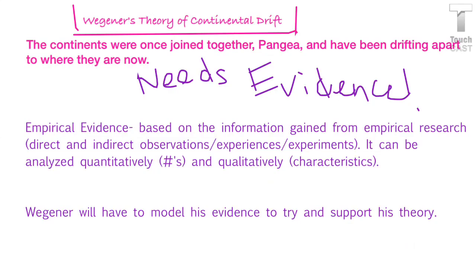In order for his theory to be accepted, he has to come up with evidence. He's going to use empirical evidence, which is evidence based on information from empirical research. All empirical research involves observations, experiences, and experiments. It can be analyzed quantitatively — think numbers, things you measure — and qualitatively, based on characteristics. Wegener would have to model his evidence to try and support his theory, so there's a lot that goes into figuring out if your theory is valid.